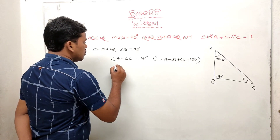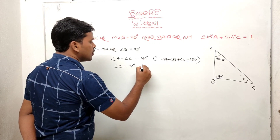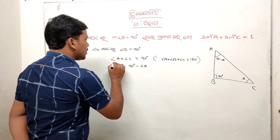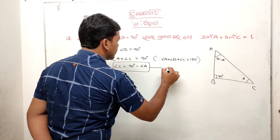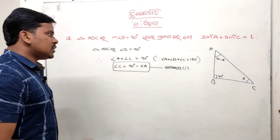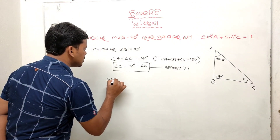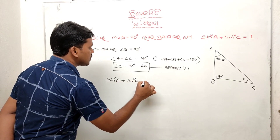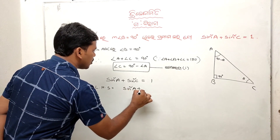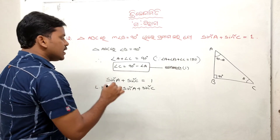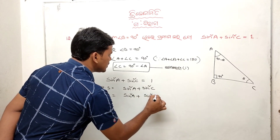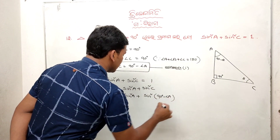Since angle B equals 90 degrees, angle C equals 90 minus angle A. We will keep sin squared A as it is, but we will change sin squared C by writing angle C as 90 minus angle A.